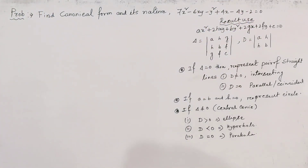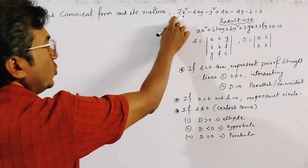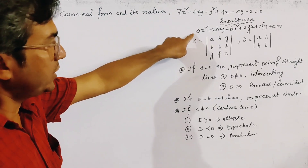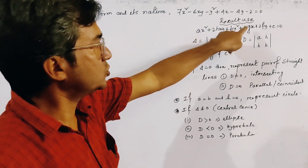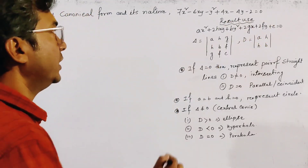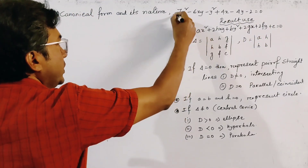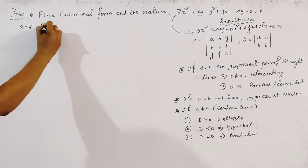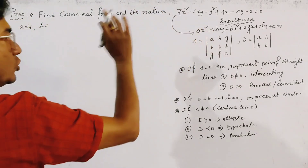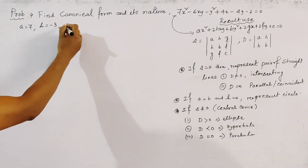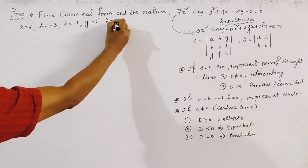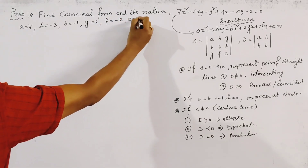To find the canonical form and the nature of the conic, we first compare this equation with the general equation of second degree: ax² + 2hxy + by² + 2gx + 2fy + c = 0. Comparing the two equations, we get: a = 7, h = -3, b = -1, g = 2, f = -2, and c = -1.